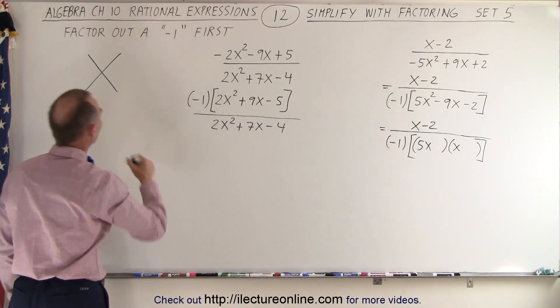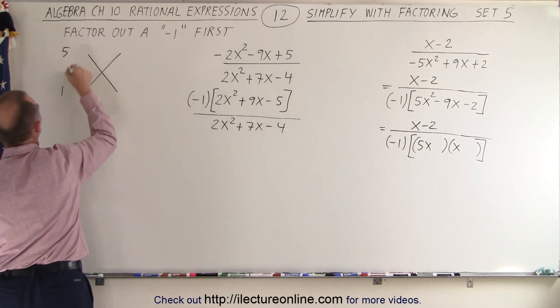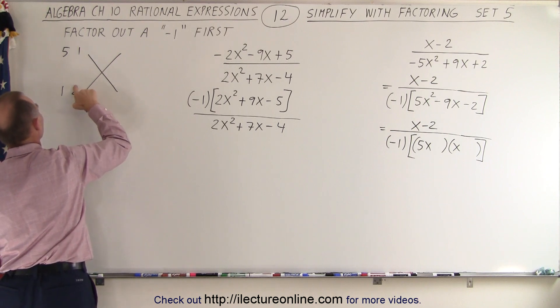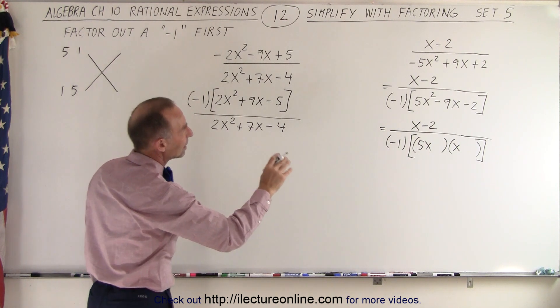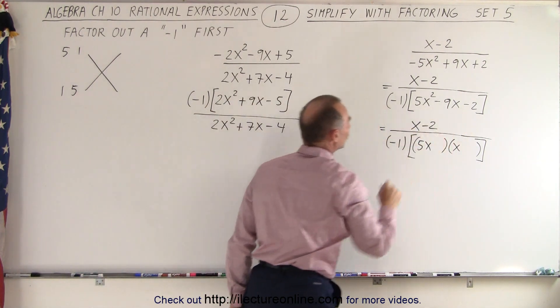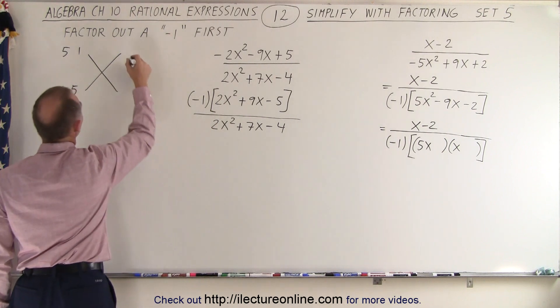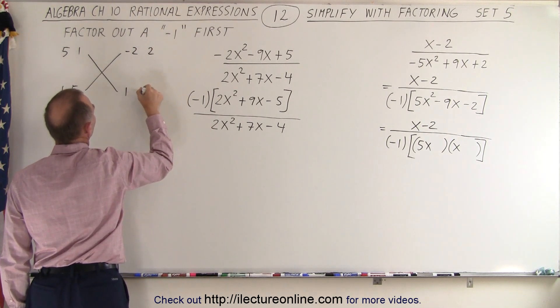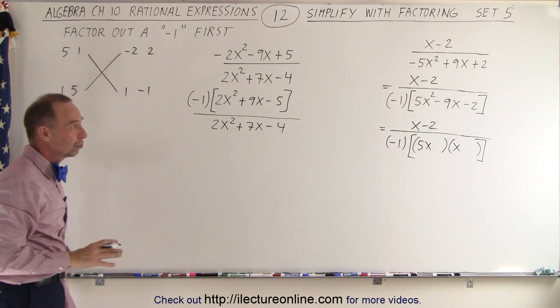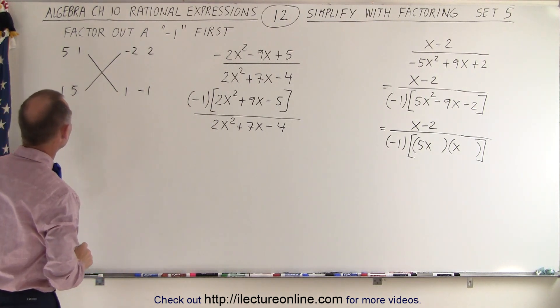To get a 5, we're going to need either 5 and a 1, or a 1 and a 5. And to get the last term, we need a negative 2. So we can get a negative 2 and a 1, or we can get a positive 2 and a negative 1. So one of those combinations should give us a negative 9 in the denominator.